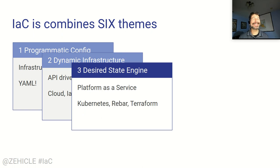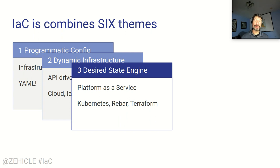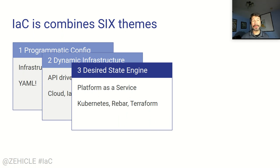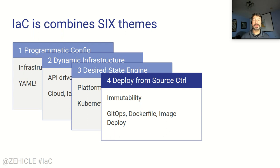The next thing to talk about is the desire state engine, which is really where Kubernetes, what Rebar does, Terraform — a lot of infrastructure as code — focuses. The idea is that I give you a YAML file, just my state description, and then that platform goes and builds it, makes all the decisions, collects the resources and infrastructure, uses APIs to actually deliver that. Ideally, if you make a change to the programmatic config, the desired state engine is going to fix it so that you've now re-conformed — it's an ongoing life cycle loop.